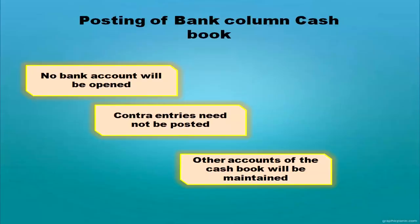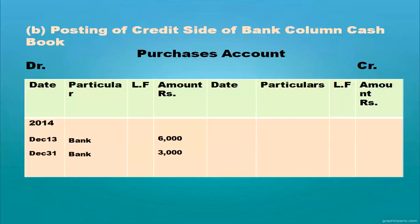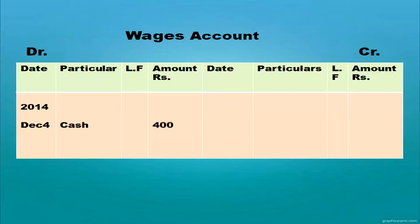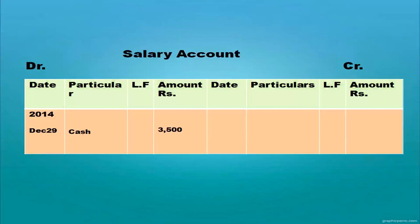For posting the bank column cash book: no bank account and no cash account is opened in the ledger. Contra entries need not be posted. Other accounts are maintained in the ledger. For the debit side: sales account — on the credit side write 'By Cash' with date and amount. For the credit side: purchases account — on the debit side write 'To Bank'; wages account debit to cash; trade expenses debit to bank; salary debit to cash; rent debit to cash — all posted on the debit side of their respective accounts.